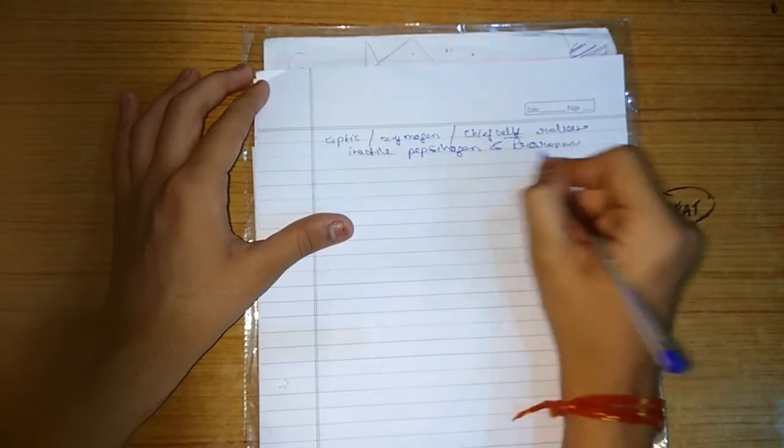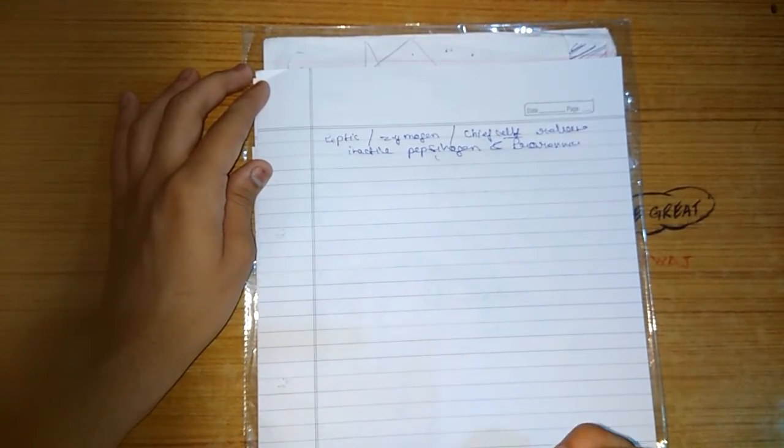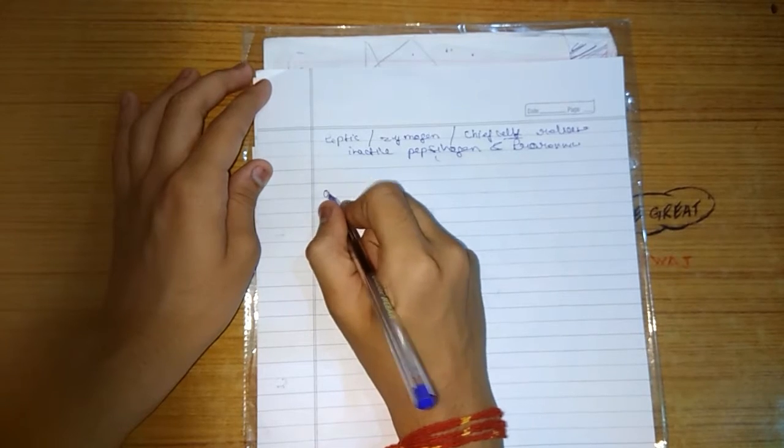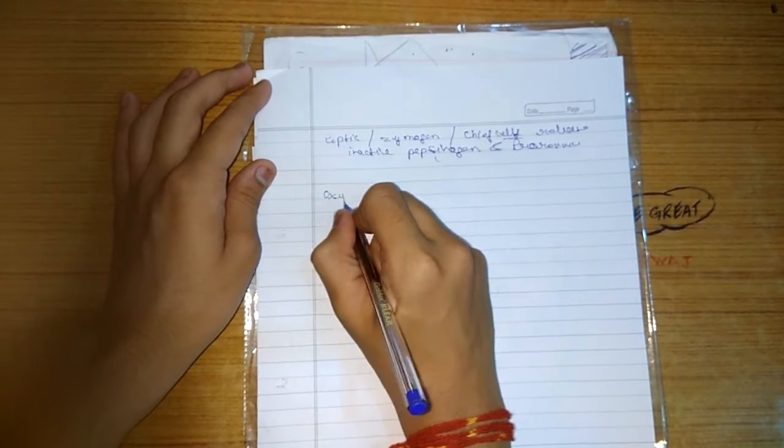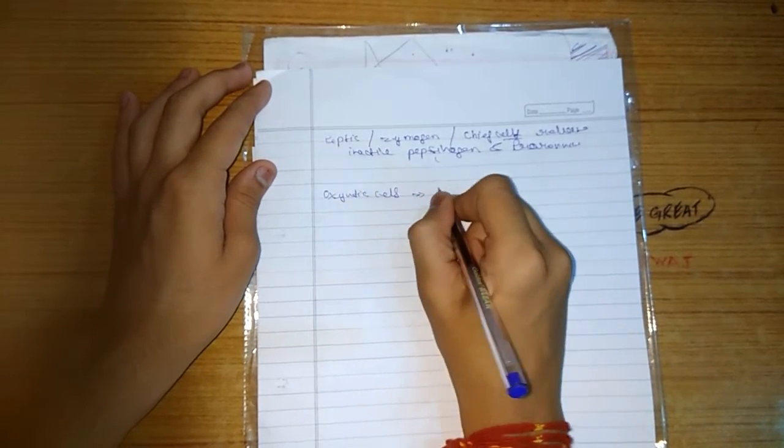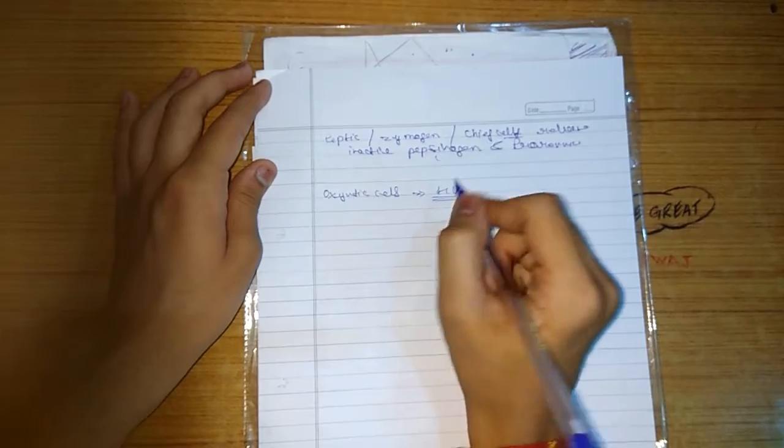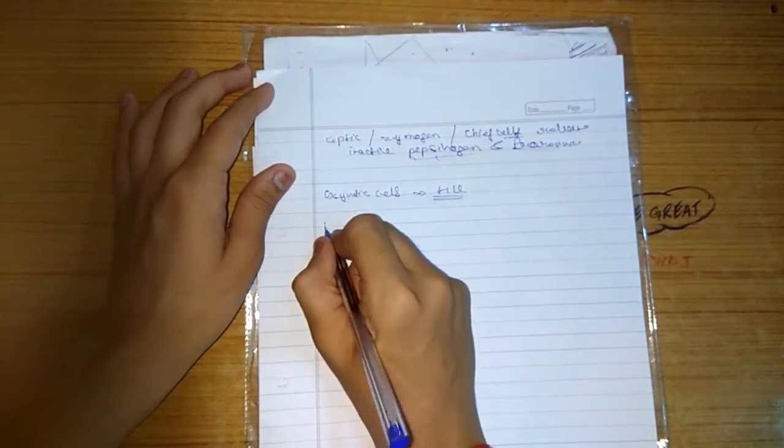So friends, prorenin and pepsinogen are the inactive enzymes. These are activated by the action of the oxyntic cells which releases the HCl in our human stomach. When HCl is released, pepsinogen and prorenin convert into their active form.